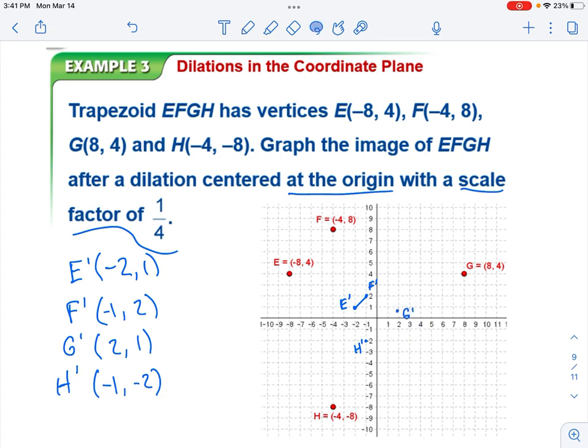And then I'm going to graph these. My pre-image was already graphed for me. I'll just have to connect the dots. Oops, I put G in the wrong spot. There we go. That looks better. There we go. There's our trapezoid. Our image trapezoid. I need to draw in my pre-image trapezoid as well. And our image is a fourth of the size of the original. Because that's what the scale factor is.